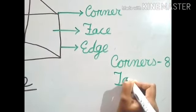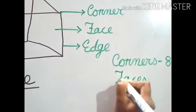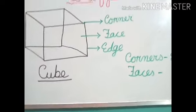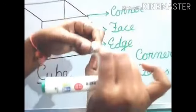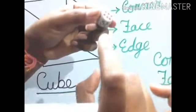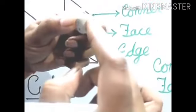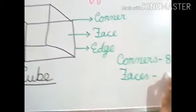Now, faces. Faces is same as like cuboid. I have a small dice, so I am showing you. One, two, three, and four. This side five, and this side six. So total six.